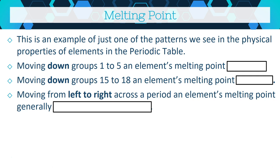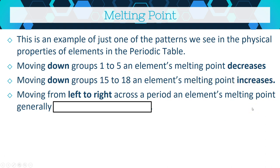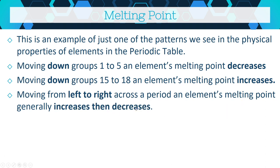Melting point is an example of a physical property with clear trends. For groups 1 through 15, going top to bottom down a group, melting point decreases — so elements at the bottom have lower melting temperatures. But for groups 15 through 18, melting point increases as you move down. As you move left to right across a period, melting points generally increase initially and then come back down — so you'd expect the highest melting points around the middle.